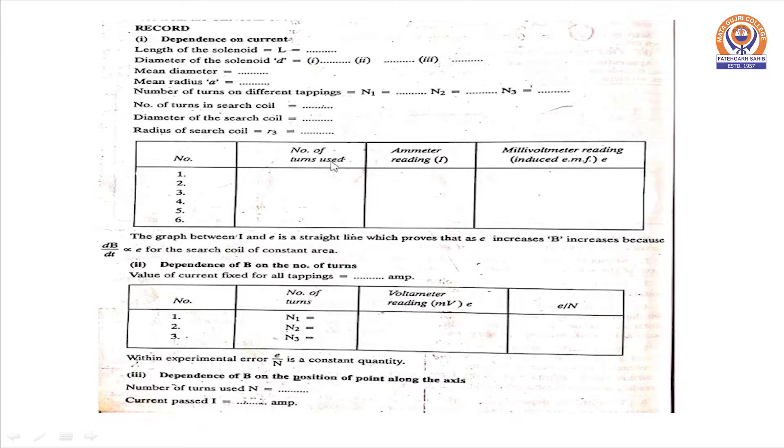The first table shows the number of turns used which is kept constant in this first table and current will be varied through this ammeter and corresponding induced EMF will be noted from the voltmeter. So this graph will give us dB over dt directly proportional to induced EMF e.